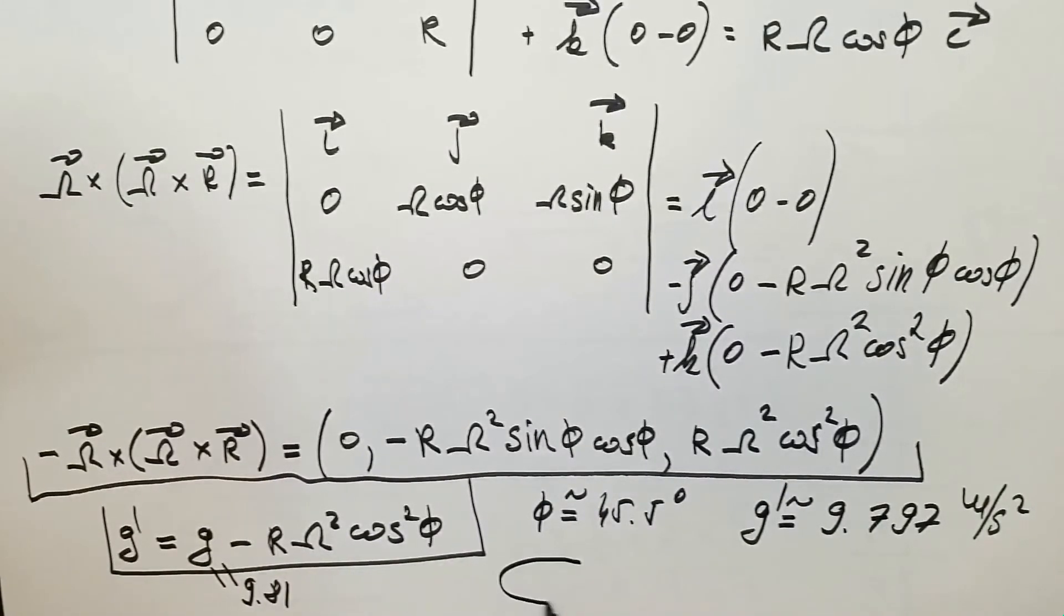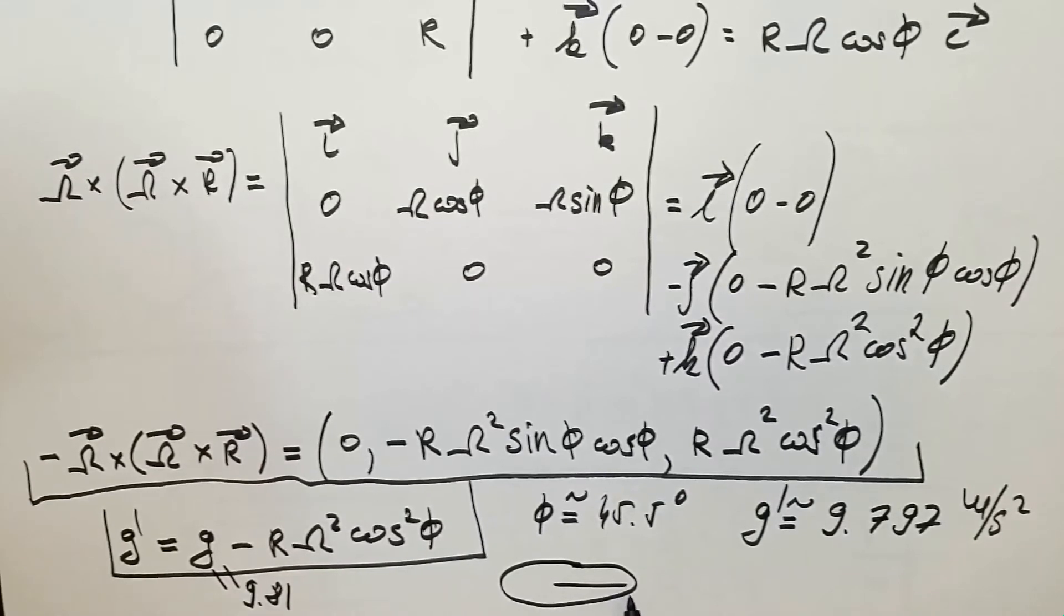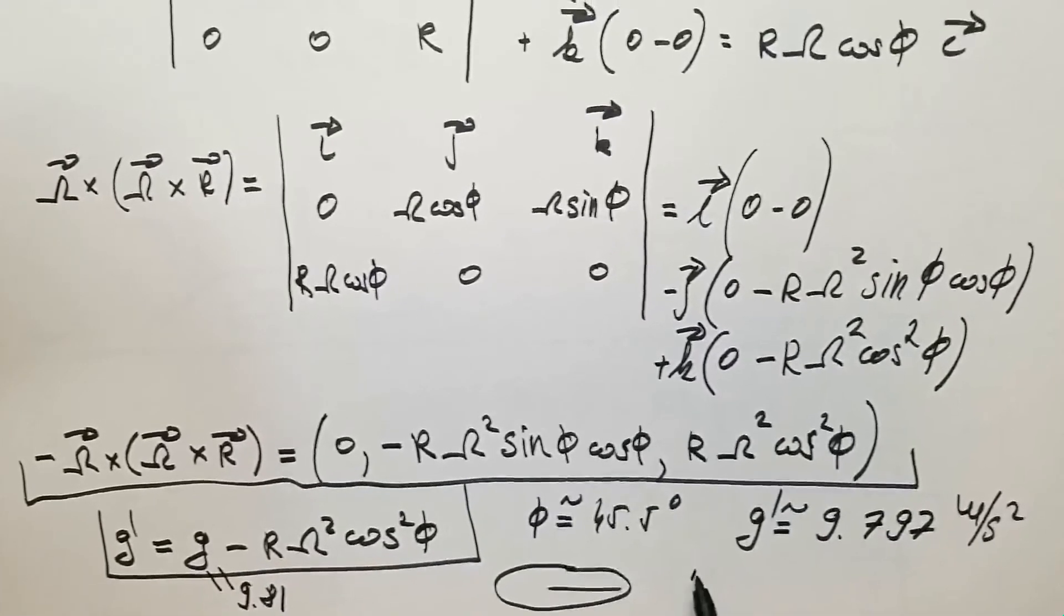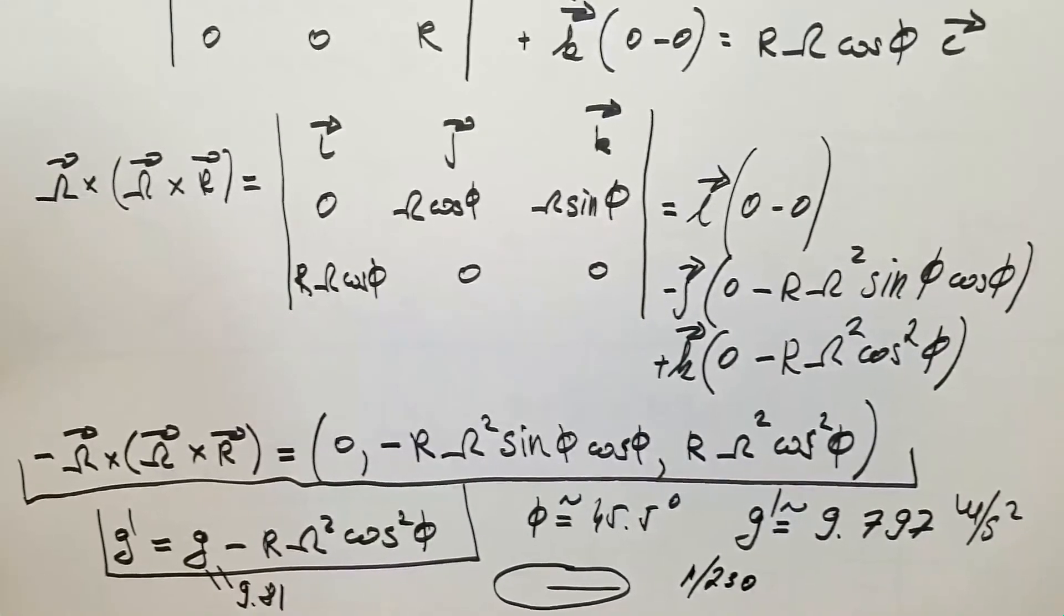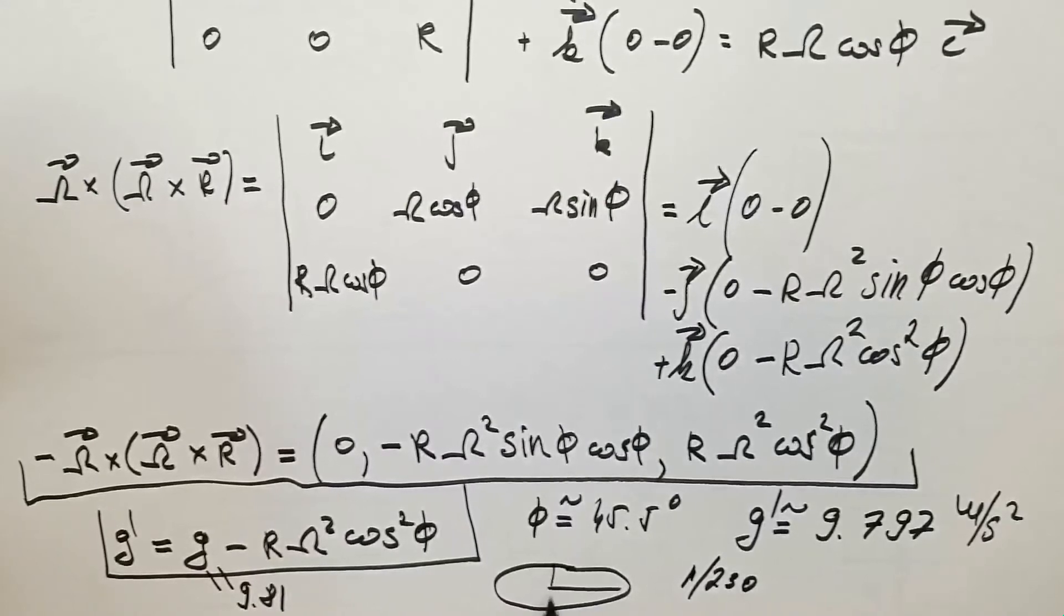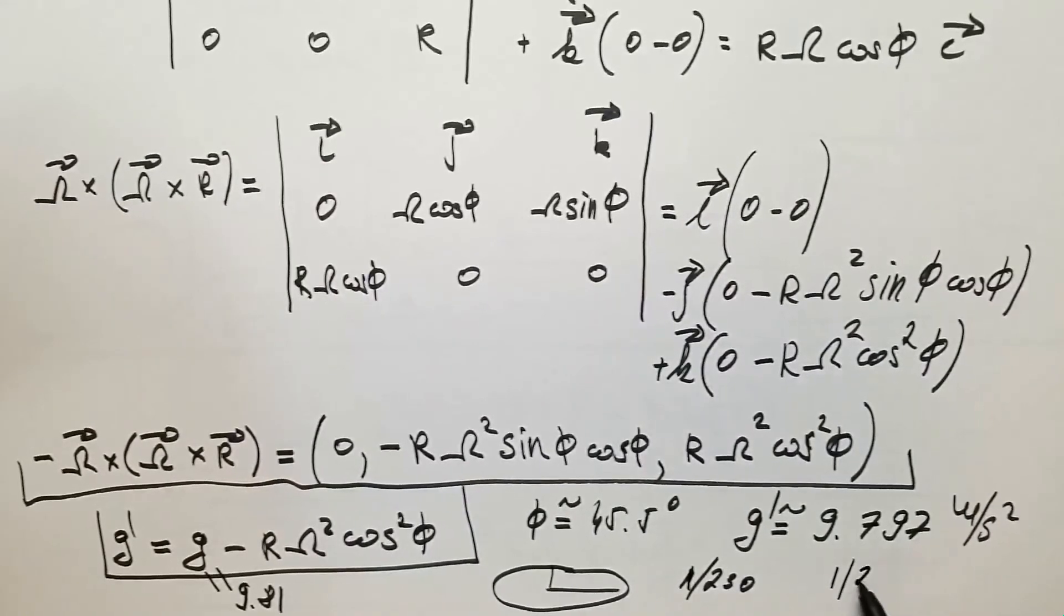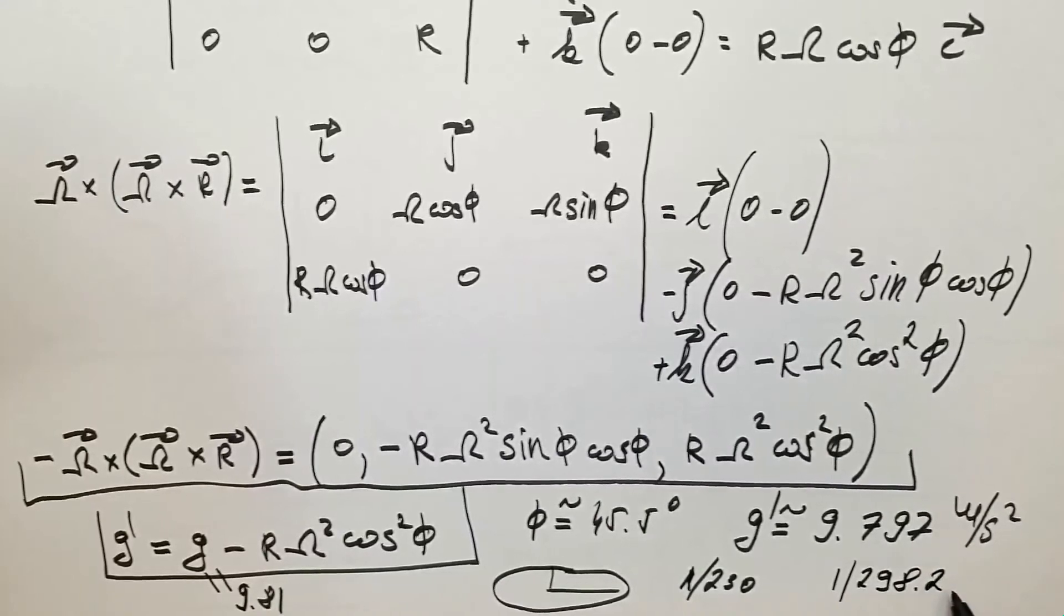Isaac Newton managed to calculate that if the Earth was a fluid, let's say water, then the radius of the Earth at equator would be 1 over 230 times larger, so 1 in 230 larger than the radius of the Earth at the poles. Clearly the figure that I made here is over exaggerating his calculation because Earth is not uniformly distributed material, namely there are variations in density.